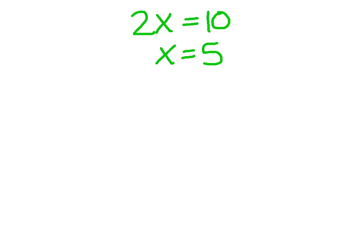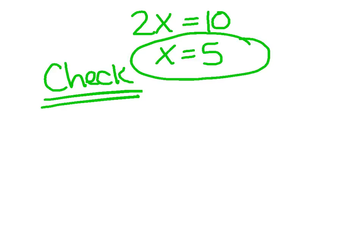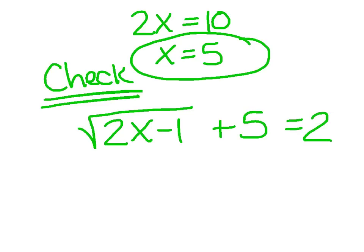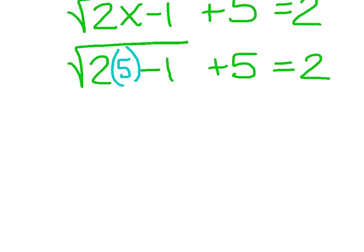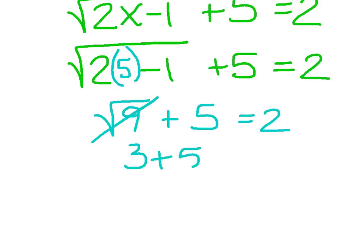At this point things are looking great, but we've got one final step. Now beware — if this is a multiple choice question, 5 is definitely going to be an answer, but don't jump to it right away. Make sure that you show a check. To check, we're just going to plug our answer into our original equation. So the square root of 2 times 5 minus 1 plus 5 equals 2. My goal is just to see if the left-hand side turns out to be 2. Well, 2 times 5 is 10 minus 1 — that leaves the square root of 9 plus 5 equals 2. The square root of 9 is 3, and is 3 plus 5 equal to 2? Of course not. 8 does not equal 2.